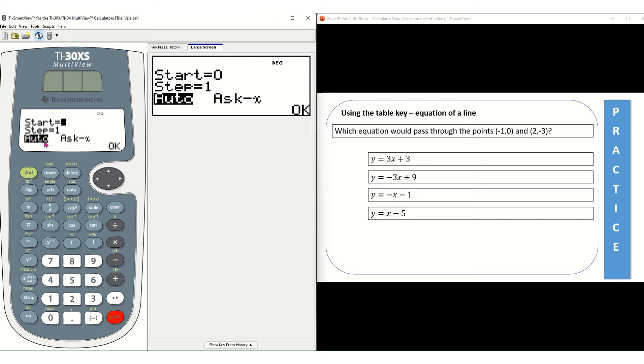As you can see we have auto selected, but to the right of it it says ask x. I want it to ask me what x values because I know the two x values negative 1 and 2. So whenever I input negative 1 and 2, the correct answer choice will give me the corresponding y value. So I want it not to be auto, I want it to be ask x.